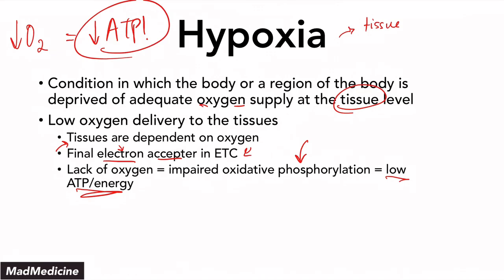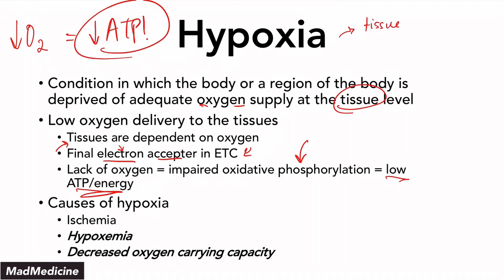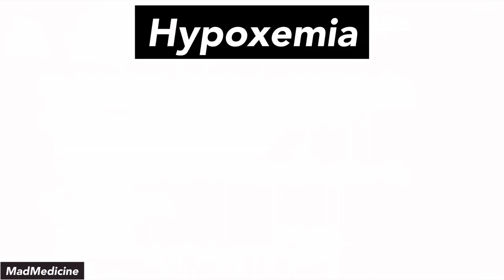When it comes to the causes of hypoxia, you have ischemia, which we discussed in our previous lecture. But in this video, we're going to be discussing hypoxemia and the decreased oxygen carrying capacity. Both of these are very important and very high yield. You really need to understand what's happening and commit that to memory. So let's dive right in and talk about hypoxemia.